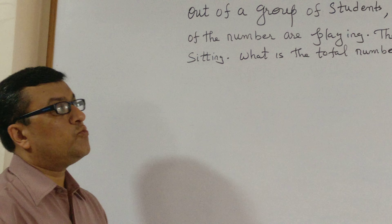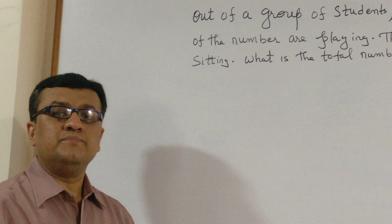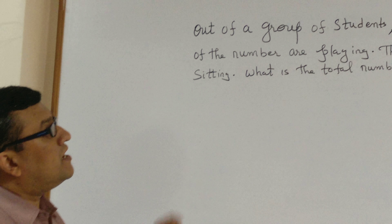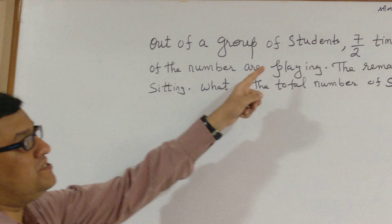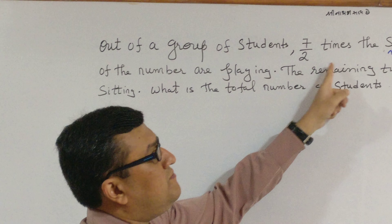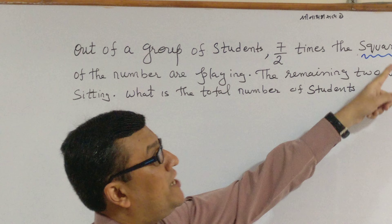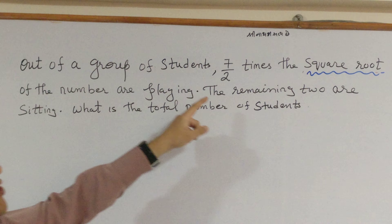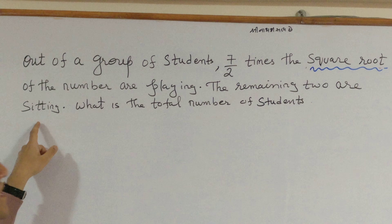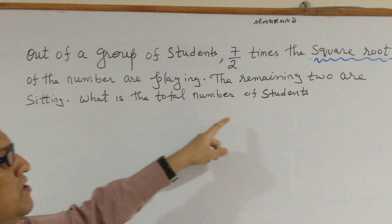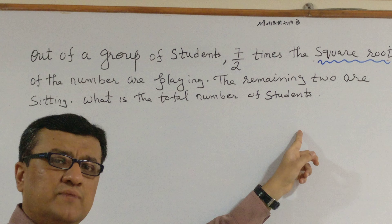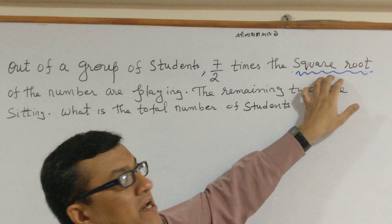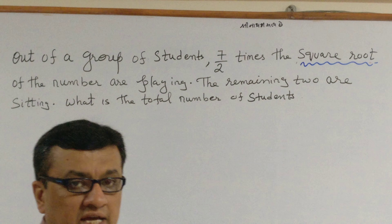Students, let's see one word problem of quadratic equations. The question says: out of a group of students, seven by two times the square root of the number are playing, and the remaining two are sitting. What is the total number of students? This sum is unique because of the word 'square root'.